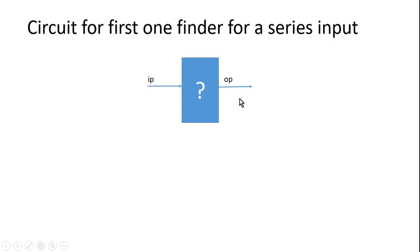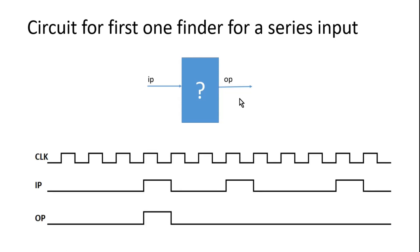Let me clarify it with the help of waveforms, so that the problem statement can be clear. So this is our clock signal, which is input to this unknown block and this is my input. Here I have considered this IP as a particular sequence, but it can be a different sequence also.